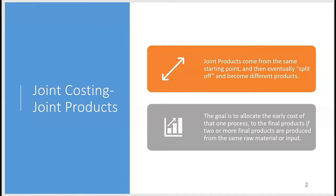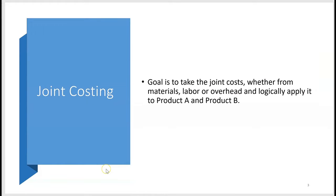When we have the same joint cost, we have to allocate that joint cost to the finished joint products. That early cost might be a cost of materials, labor, or overhead. On the exam, they'll tell you how much was spent in joint cost before you could recognize product A from product B, and you'll be asked to allocate that joint cost to the finished products — how much to product A and how much to product B. It's going to be a pro rata calculation.